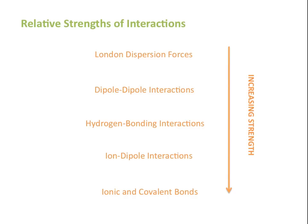Looking at the relative strength of interactions, London dispersion forces are typically the weakest type, but they're so prevalent in most molecules that they often account for the majority of interactions between molecules. Next in strength are dipole-dipole interactions, then hydrogen bonds, followed by ion-dipole interactions. Ionic and covalent bonds are not a type of intermolecular force — they appear on the chart of increasing strength just as a reminder that all intermolecular forces are weaker than the bonds within a molecule.